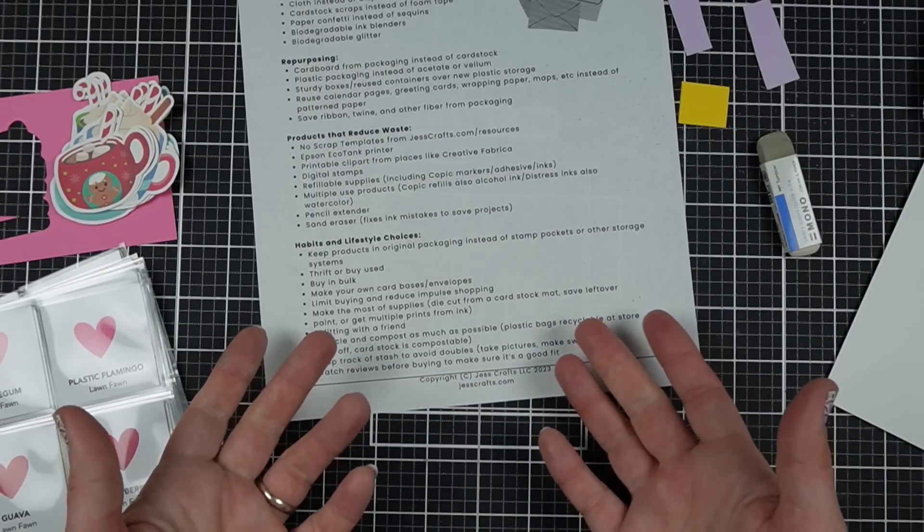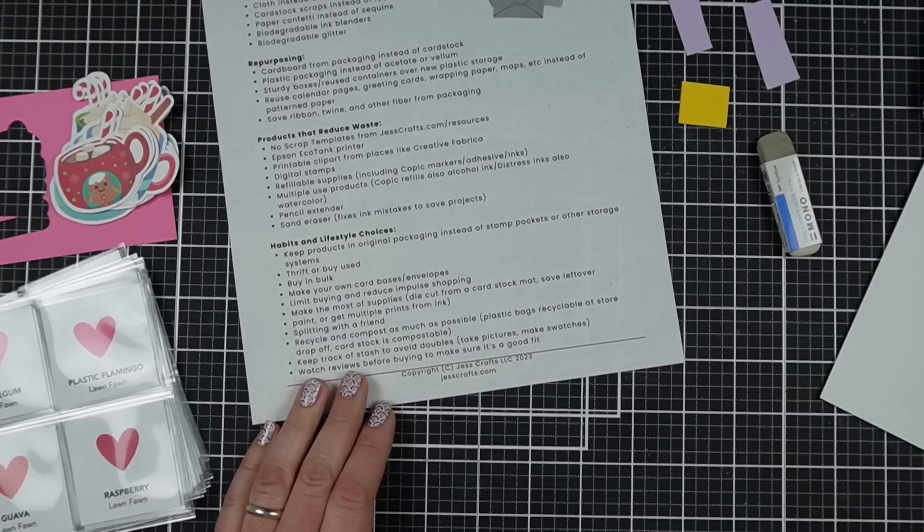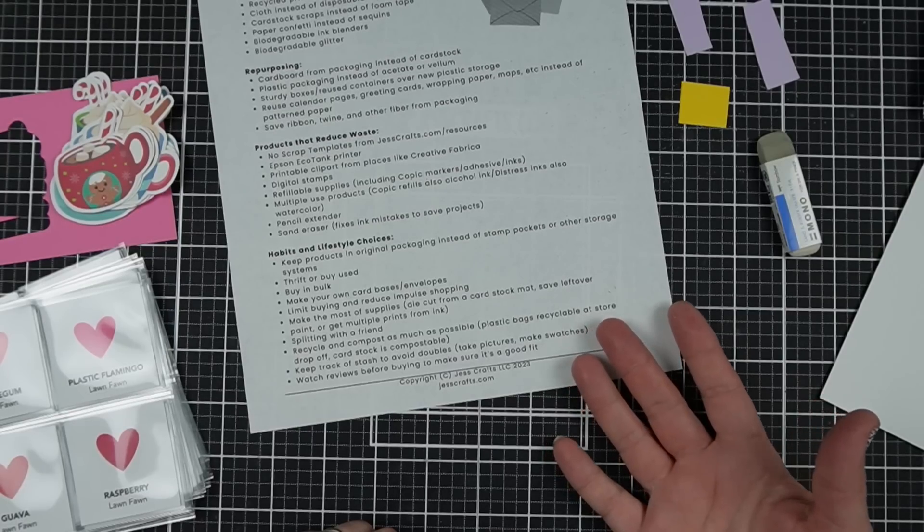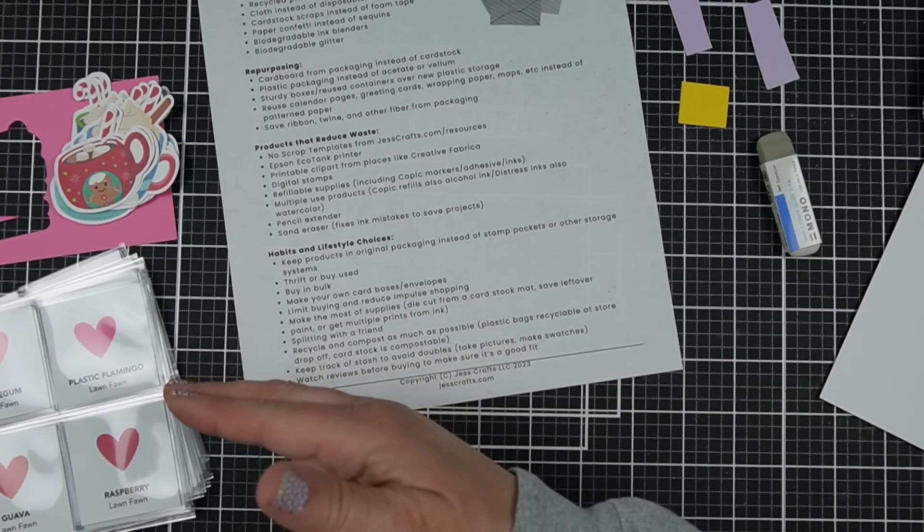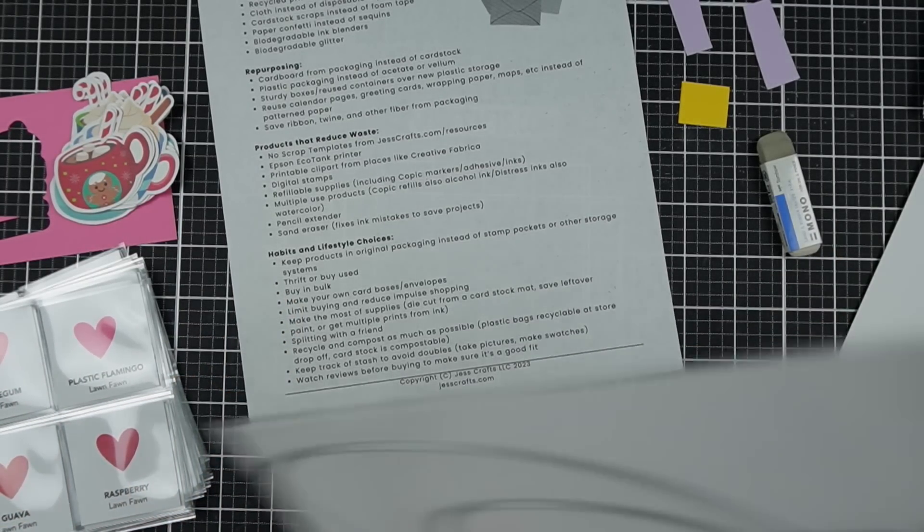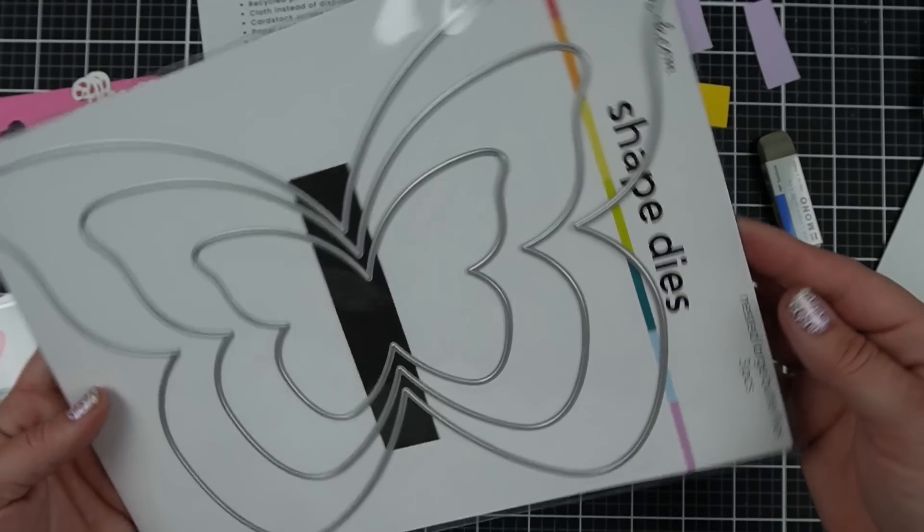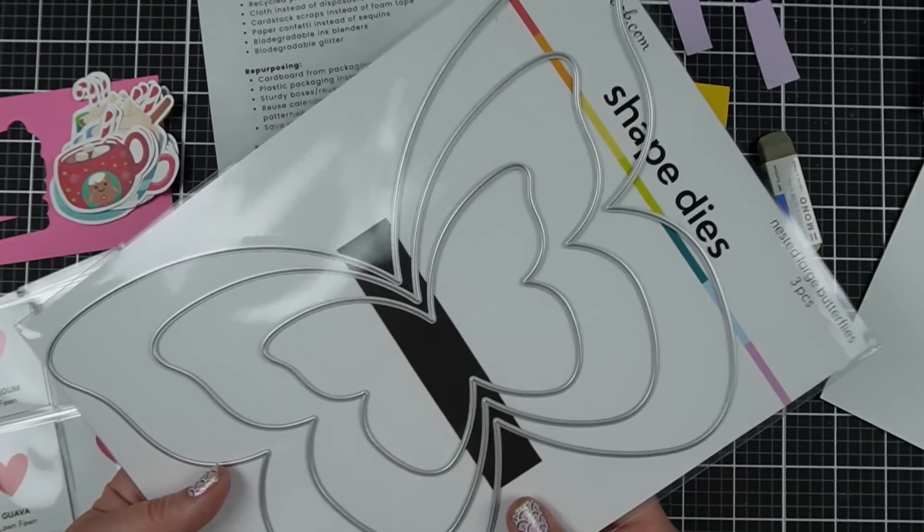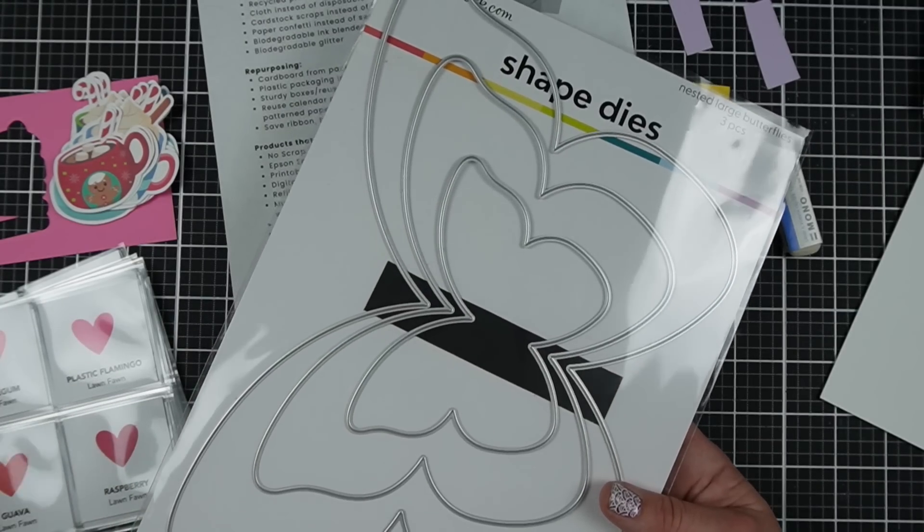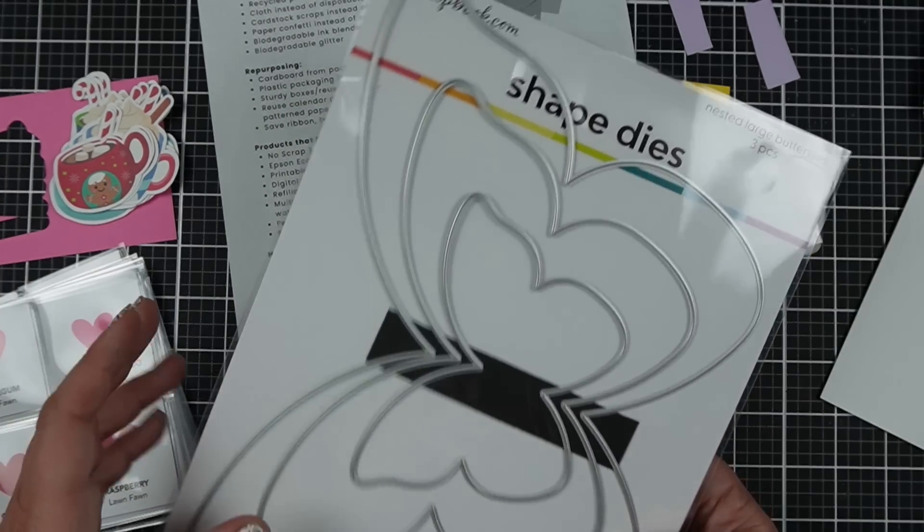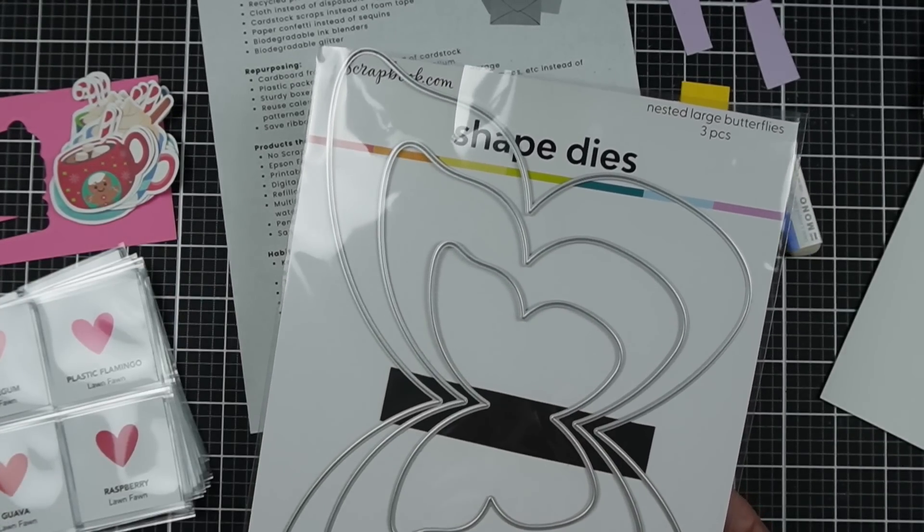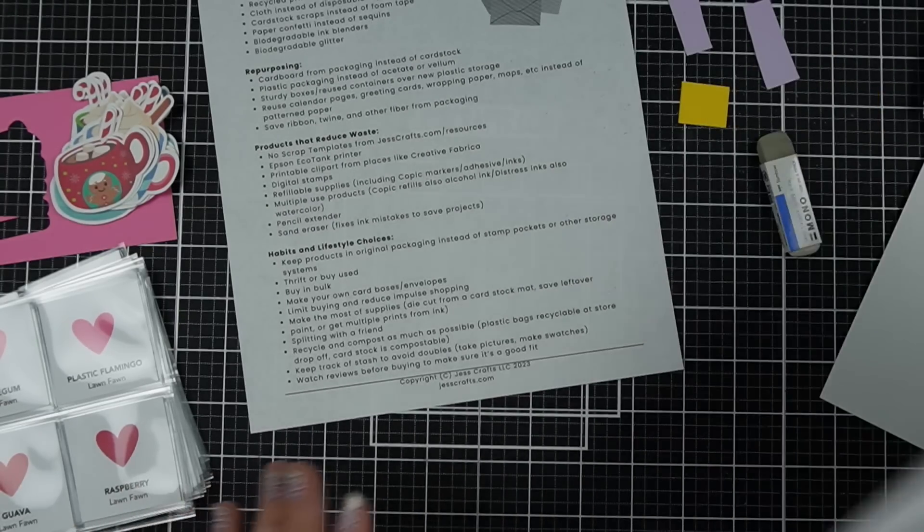Habits and lifestyle choice. I don't really know what to call this category. It's just like the decisions that we make regularly. Keeping products in original packaging instead of stamp pockets or other storage systems. A lot of times eventually the original packaging will rip, but I like to cut the top off of it. So like you get a new stamp set, and then you cut the top off. Like these are just gigantic. But I cut the top off and then I added a little magnet strip to keep them in place. But avoiding things like that, because if I have just a single word, for instance, I don't need to hold it in place with a magnet.